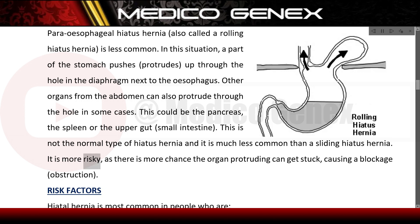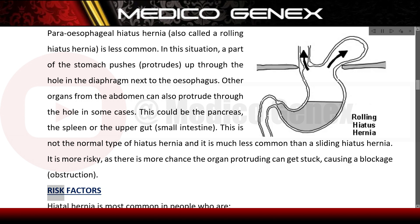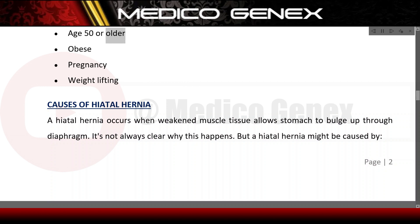The paraesophageal type is more risky, as there is more chance the organ protruding can get stuck, causing a blockage or obstruction. Risk factors for hiatal hernia include: being age 50 or older, obesity, pregnancy, and weightlifting.